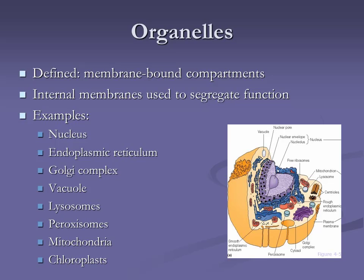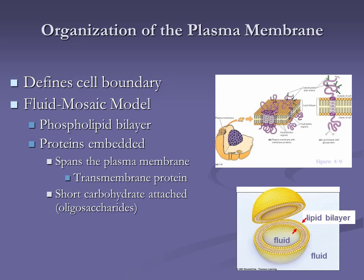Let's get into our membrane-bound organelles. This may be a little anti-intuitive because you may not think the plasma membrane — the boundary of the cell itself — qualifies as an organelle. Just like you may be surprised when I tell you the biggest organ in your body is your skin, which has more surface area than anything else. The plasma membrane is important; it defines what the cell is, the extent of the cell.